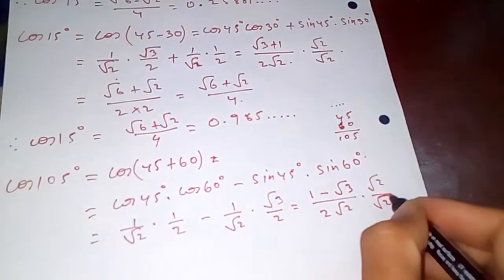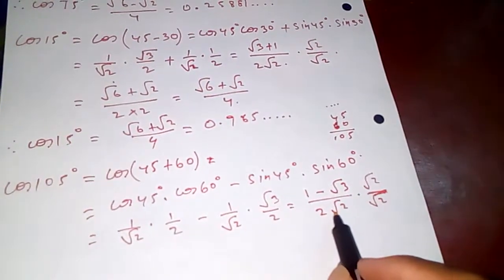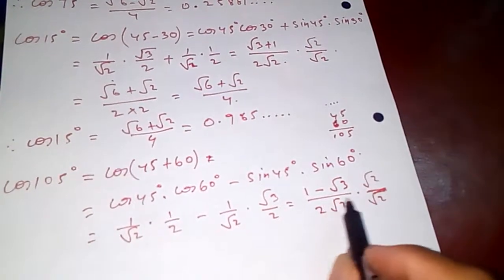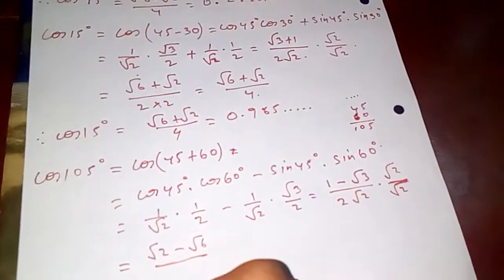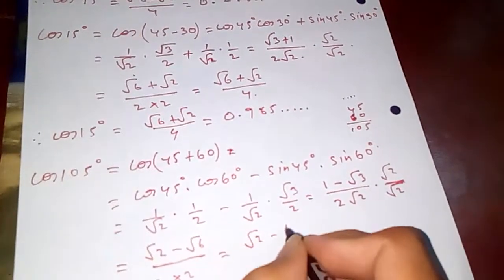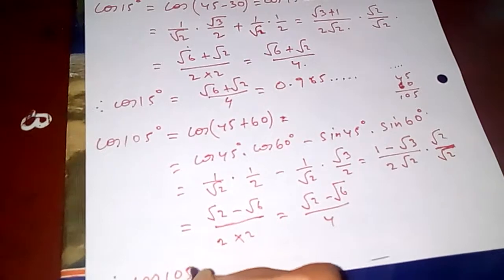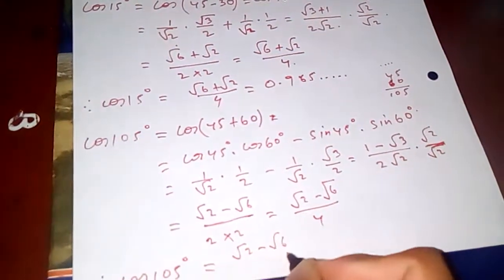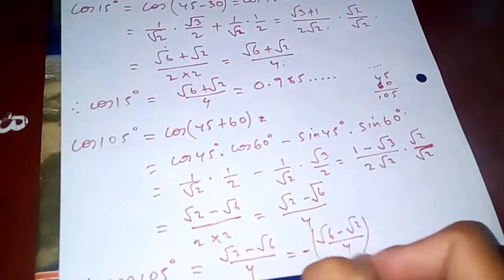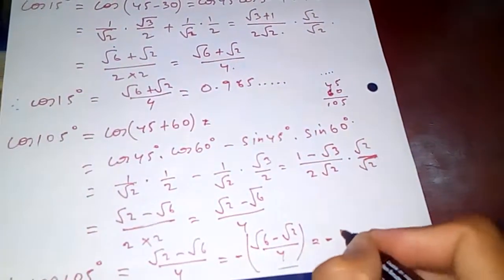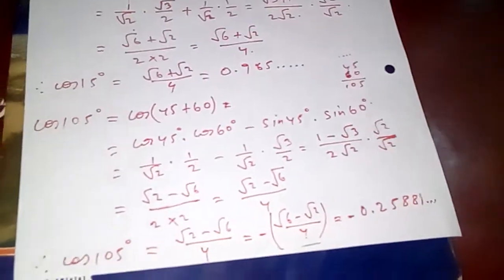We multiply by √2 to eliminate the √2 in the denominator. This gives (√2 − √6) over 4. Therefore cos 105 degrees is (√2 − √6)/4, or equivalently negative of (√6 − √2)/4. Calculating this gives approximately −0.25881.